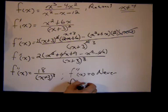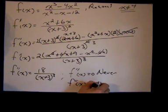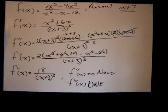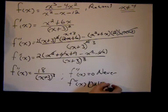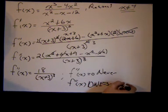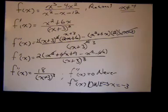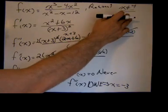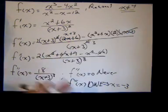Anyway, f double prime of x is undefined or does not exist. It's the same place it hasn't existed in the first derivative and in the original function and that implies that x equals negative 3. Again, the original function did not exist at positive 4.